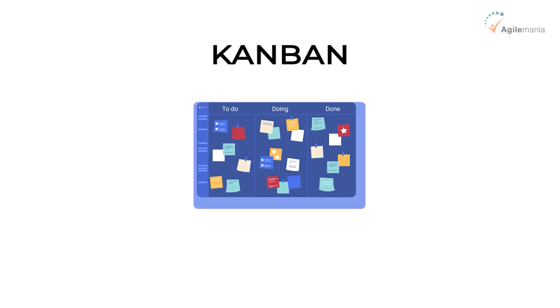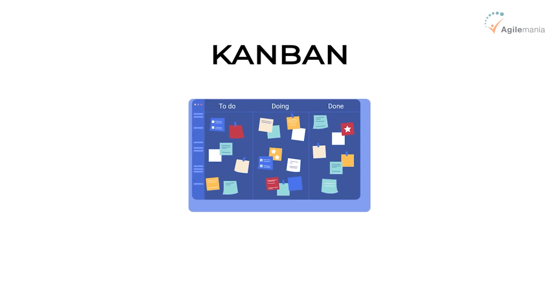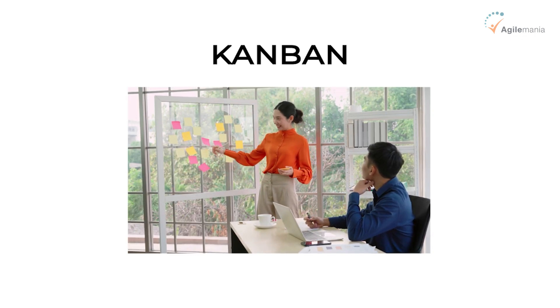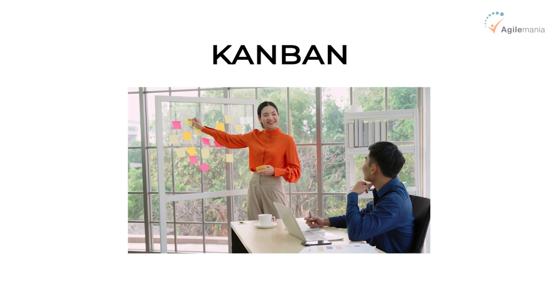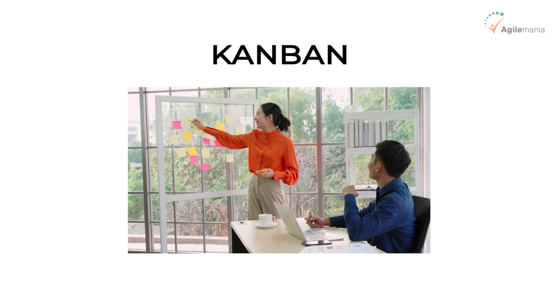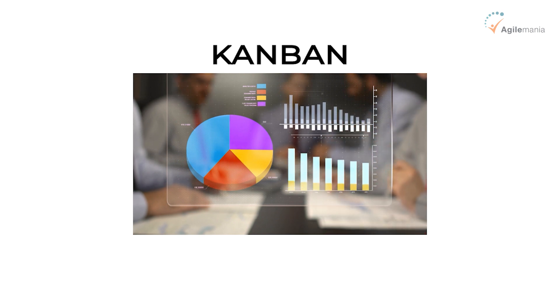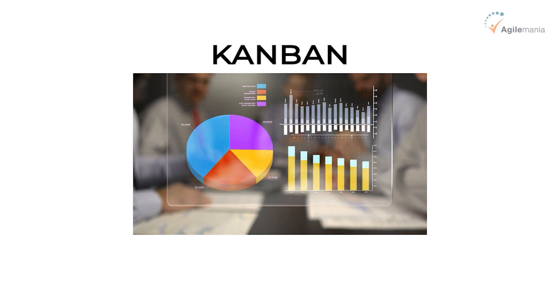Kanban comes from Japan — it comes from the Toyota production system — and technically it is not a framework. It's more a way of working, a way of looking at the end-to-end process of how you are delivering work and constantly optimizing and evolving it, rather than coming in and saying there's a new process and a new way of working that you should start following. So in Kanban you are trying to improve the flow: how do we visualize all the work, how do we minimize the amount of work that is in progress, and how do we optimize delivery? Some frameworks give you processes, some give you more practices than processes.